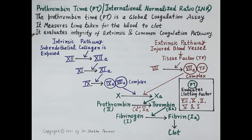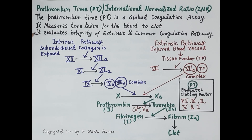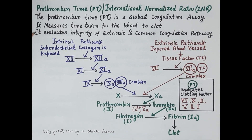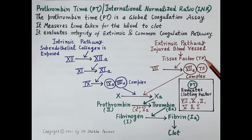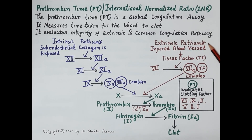Prothrombin time evaluates the integrity of the extrinsic and common coagulation pathways. Now let's recapitulate the extrinsic pathway of coagulation. The extrinsic pathway of blood coagulation is initiated by external injury to the wall of a blood vessel, for example due to trauma or an accident.